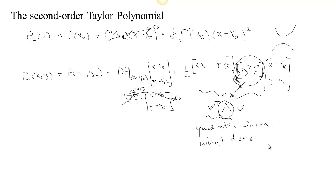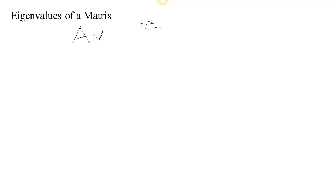Understanding a quadratic form involves knowing something about matrices. Unlike operations on a single number, matrices work on a list of numbers. If you have a matrix, you can make a function by multiplying that matrix times a vector. In our case we're thinking about a two-by-two matrix, so matrix A makes a function that starts with two numbers and ends with two different numbers — or equivalently, it takes a vector in two-dimensional space and creates a new vector Av in two-dimensional space. Understanding v transpose Av starts with understanding what Av does.